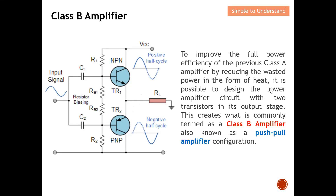It is possible to design a power amplifier circuit with two transistors in its output stage. Instead of one transistor as in Class A, Class B uses two transistors at its output stage. This creates what is commonly termed a Class B amplifier, or sometimes called a push-pull amplifier.